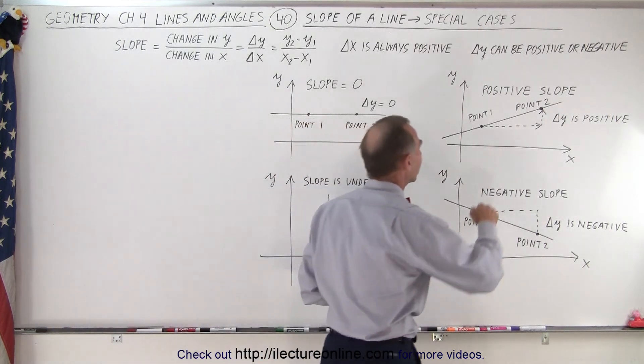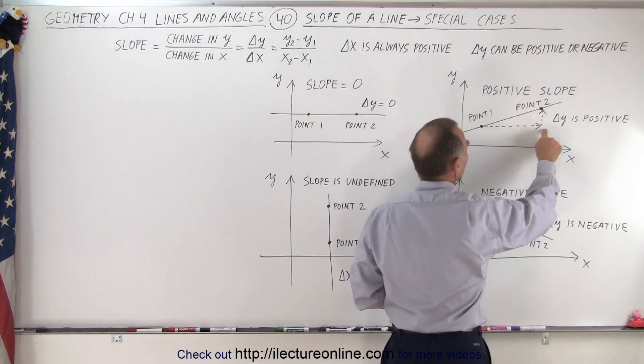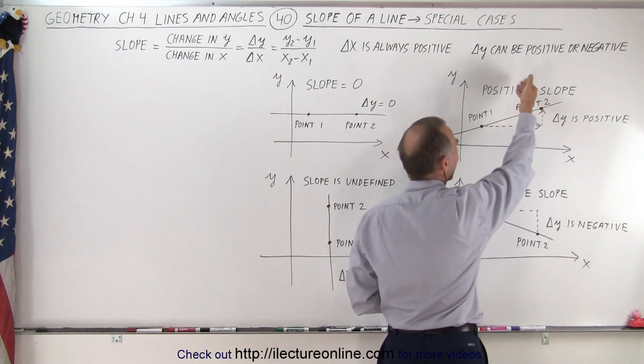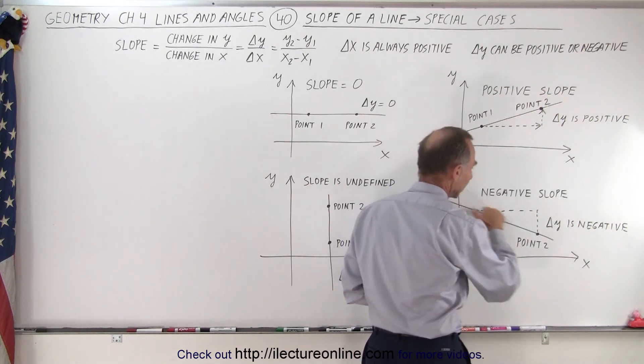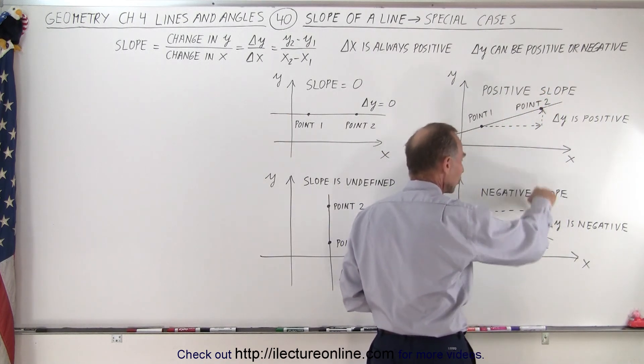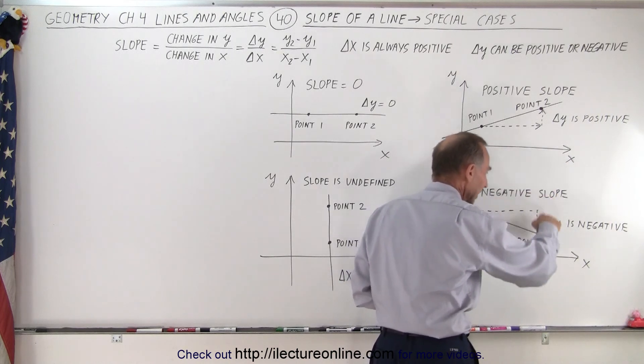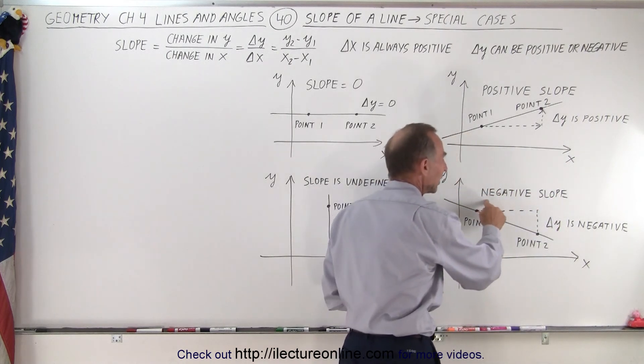So here you can see that if the line is sloped like this, the change in the Y direction is positive, and therefore we have a positive slope. If the line is like this, then you can see the change in the Y direction is downward or in the negative direction, therefore we end up with a negative slope.